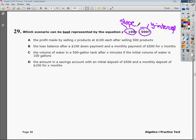A says the profit made by selling x products at $100 each after selling 500 products. Well, the number of products that you sell would be the x value, so this isn't the correct answer. It doesn't tell you the profit made by selling x products after selling 500 products. That doesn't make any sense.